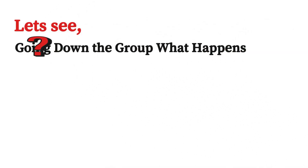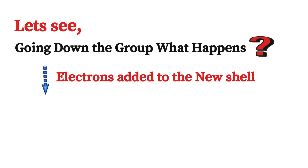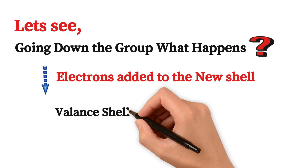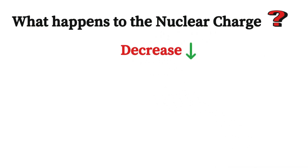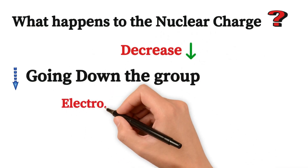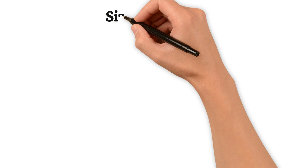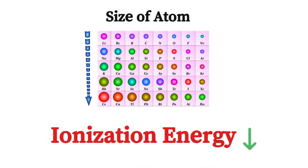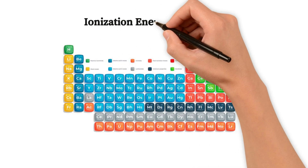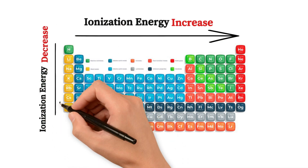Going down the group, electrons are added to new shells, so the valence shell is farther away from the nucleus. This means nuclear charge decreases. Every time we go down the group, electrons are added to a new shell, so nuclear charge decreases, the size of the atom increases, and therefore ionization energy decreases.